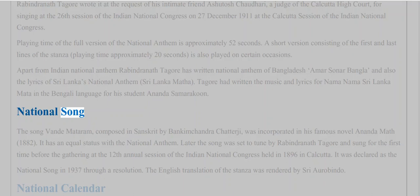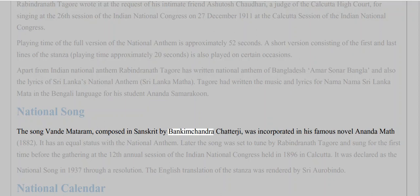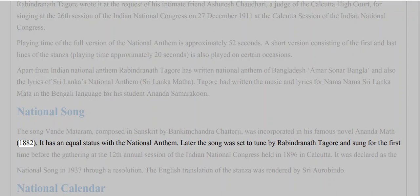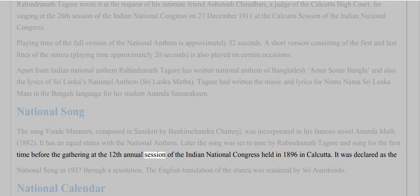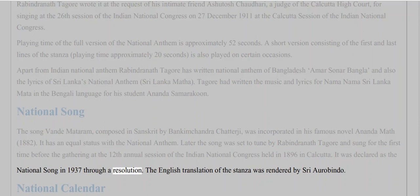National Song: The song 'Vande Mataram,' composed in Sanskrit by Bankim Chandra Chatterjee, was incorporated in his famous novel Ananda Math (1882). It has equal status with the National Anthem. The song was later set to tune by Rabindranath Tagore and sung for the first time before a gathering at the 12th Annual Session of the Indian National Congress held in 1896 in Calcutta. It was declared the National Song in 1937 through a resolution. The English translation of the stanza was rendered by Sri Aurobindo.